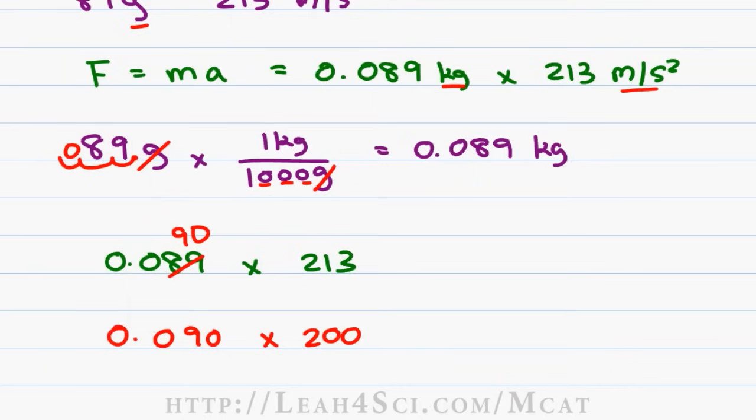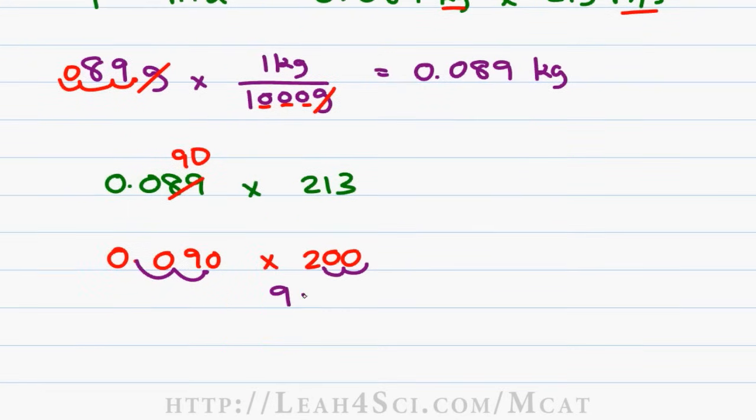So we've simplified the question but we still have the issue of numbers that we can't necessarily do in our head. So here's what I'm going to do. I'll take the first number and multiply it by 100. I'll take the second number divided by 100. This gives me 9 times 2 which I can certainly do in my head and the answer is 18 newtons.